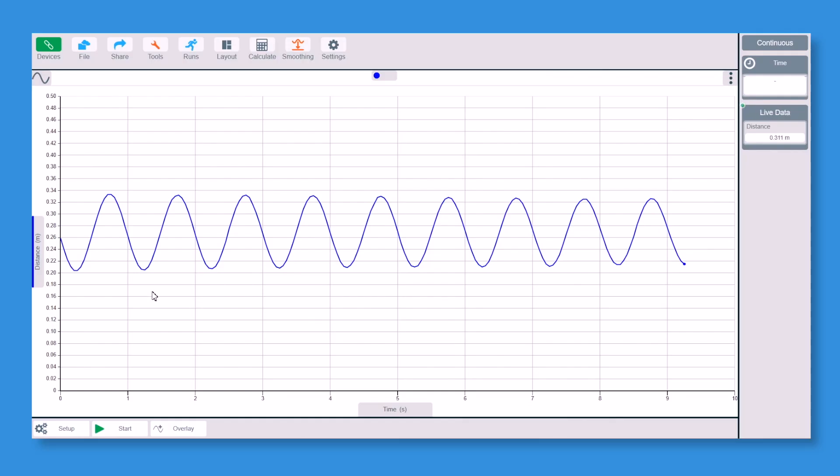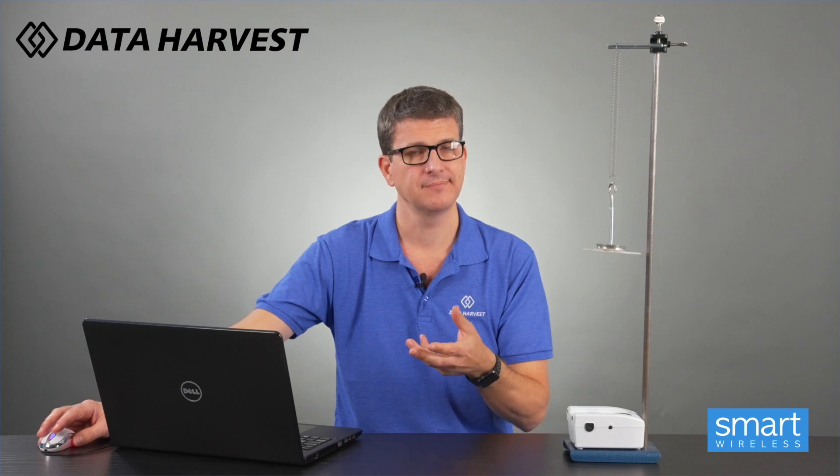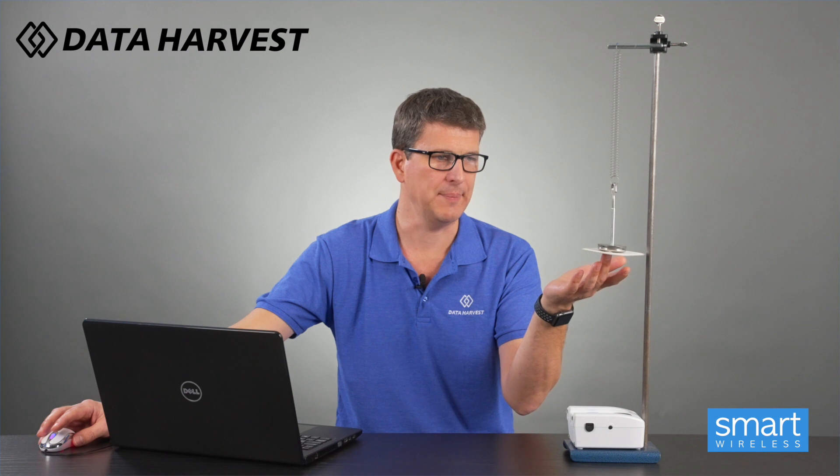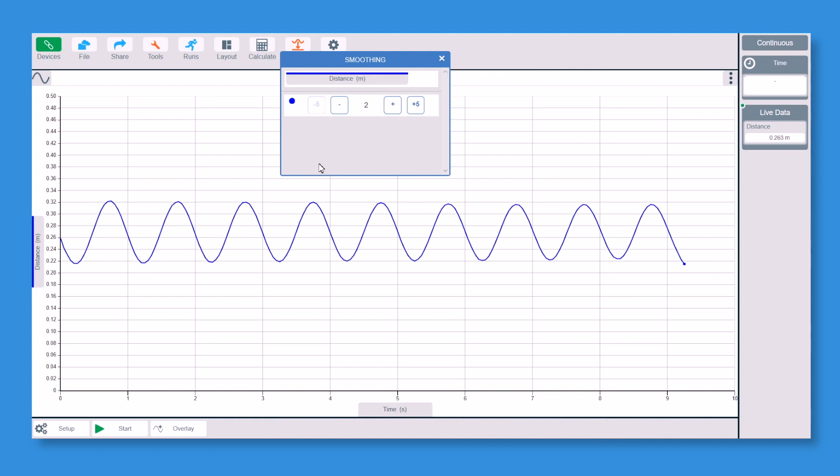So, we've got a nice SHM on the screen at the moment. What we can do with this now, is we can now do some maths and get the velocity of that. Do some further maths, and because we have the velocity, we can then get the acceleration. Just stop that bouncing as well. There we go. Now, before we do that, I am just going to smooth the data very slightly. It looked quite smooth, but just to make the formula look nicer as we go through.